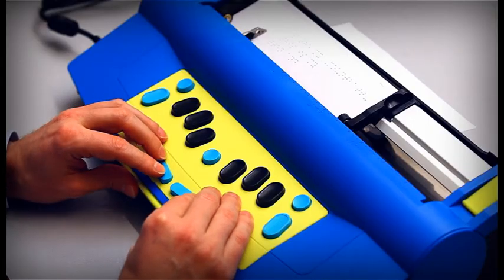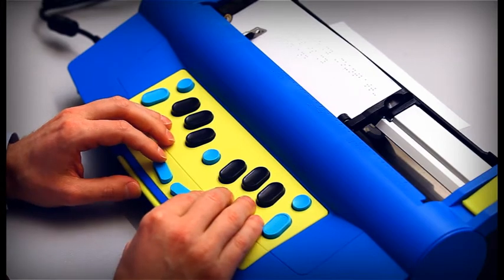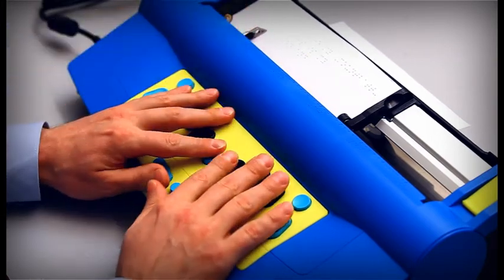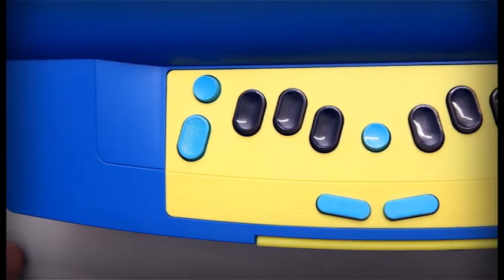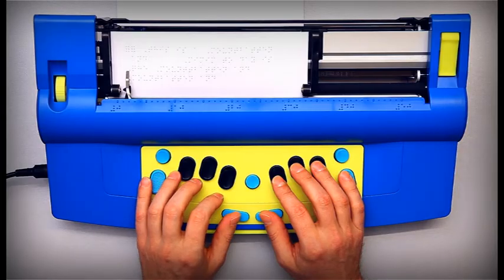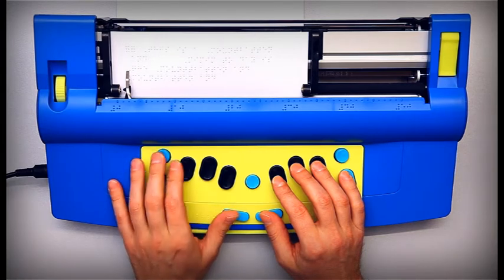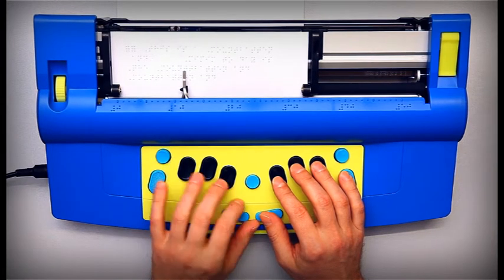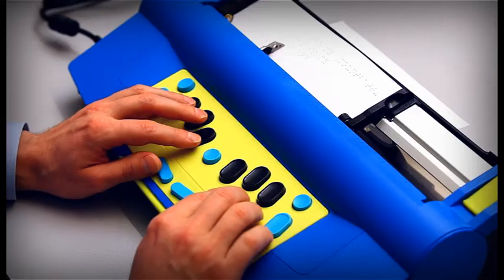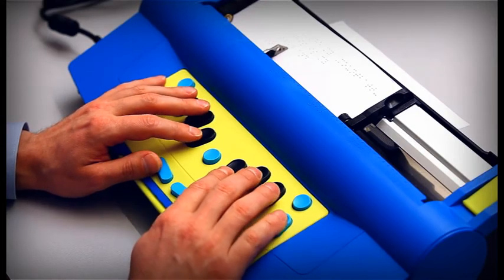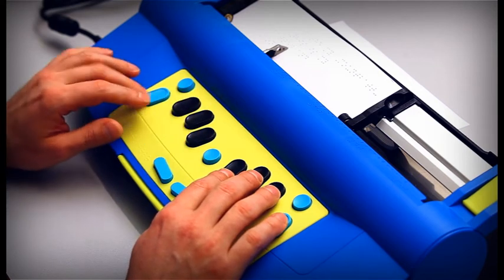There are four other keys that help with navigation and typing. Keys with the same functions are found in standard computer keyboards. Tab moves right five spaces, back tab moves left five spaces, space moves right one space and backspace moves left one space.